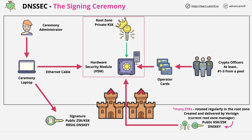This process happens every three months. It's generally broadcast, notes of the process are available, and it's publicly audited. The level of security procedure which goes into ensuring that groups of human participants can't collude and corrupt the process is extreme.